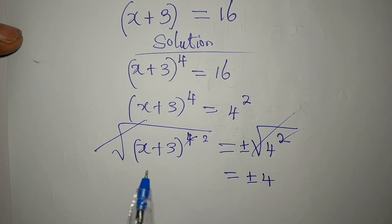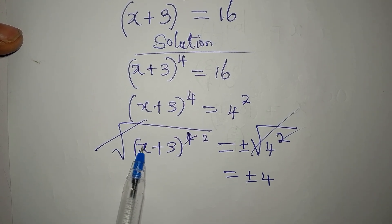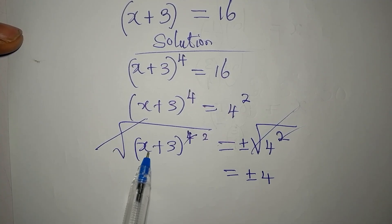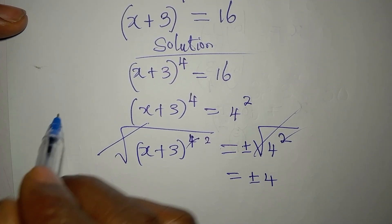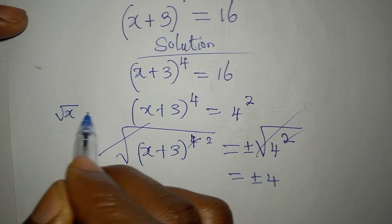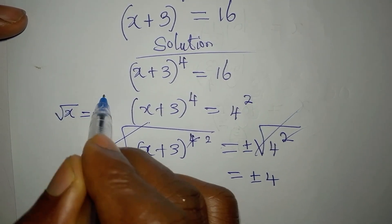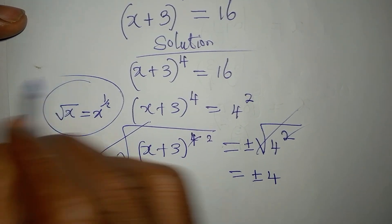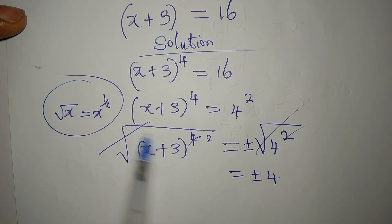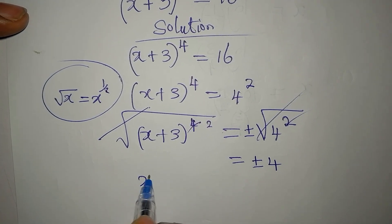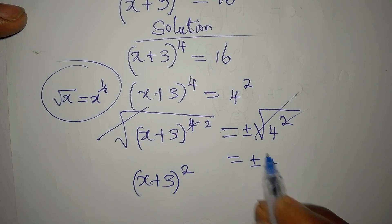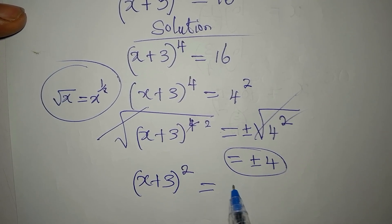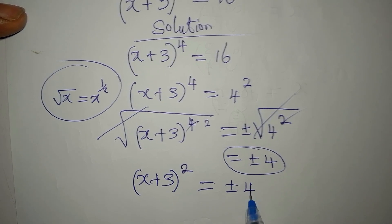To explain this: the square root of x is the same as x to the power of 1 over 2. So applying that here, the exponents interact and we get 2 remaining, giving us (x + 3) squared equals plus or minus 4.